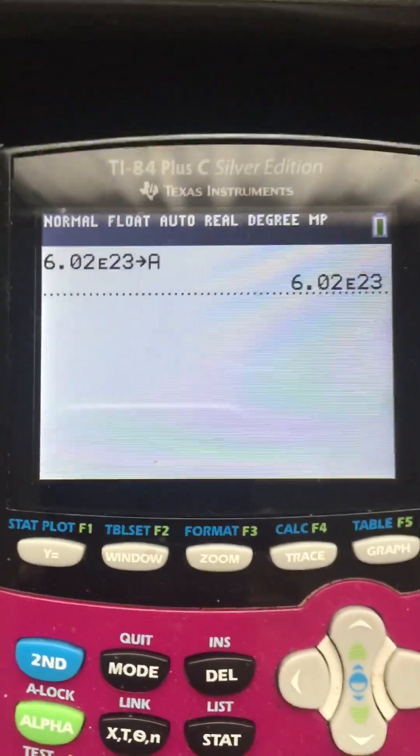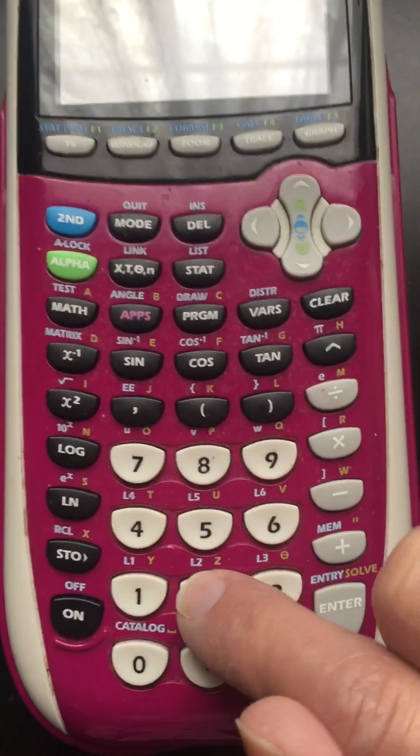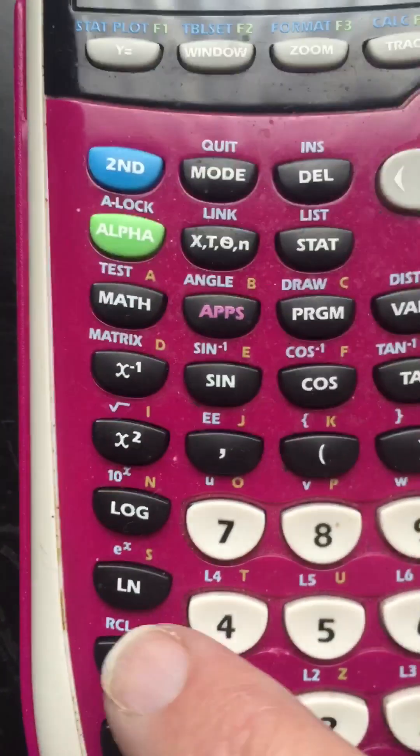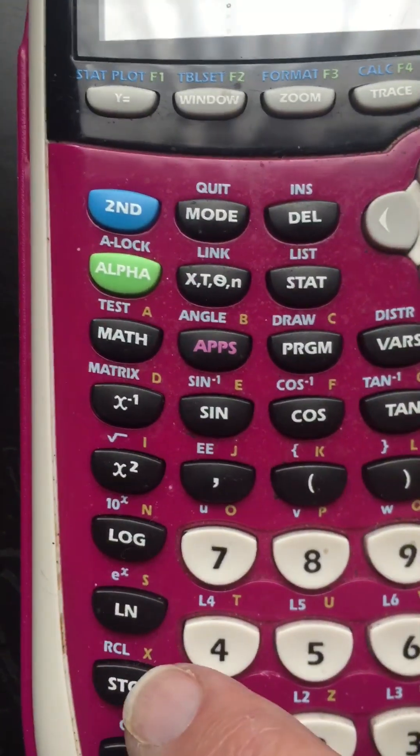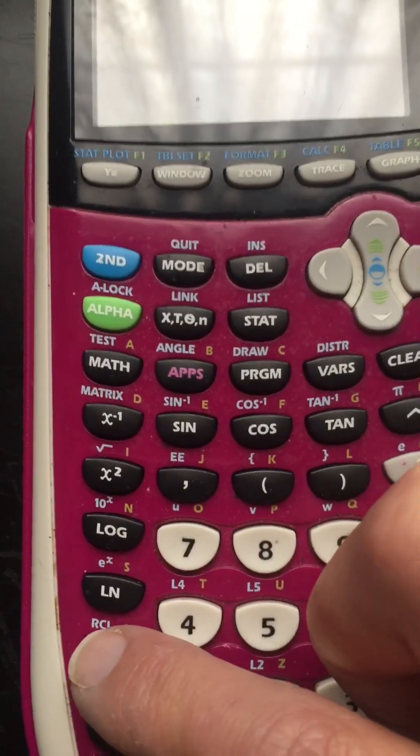Okay, so now I'm gonna do a math problem. I want to know what two times Avogadro's number is, so I'm gonna say two times. And now I gotta recall it. And do you see how painted on the back is RCL? That stands for recall.